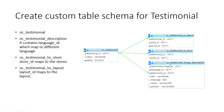We also have a description table which has language-specific data including language ID and testimonial ID. The testimonial image ID is included here because each testimonial can have its own image for each language. If you want to show only one image for the whole testimonial, you could put it in the main table instead.